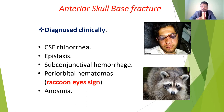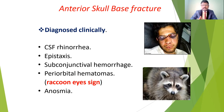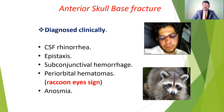In anterior skull base fractures, patients will get CSF rhinorrhea — because of the skull fracture and dura mater damage, CSF leaks and comes out from the nose. Sometimes CSF may also leak from the ear canal, called CSF otorrhea. There may also be epistaxis — bleeding from the nose — as well as subconjunctival hemorrhage. Another important sign in anterior skull base fractures is raccoon eye sign — periorbital ecchymosis or accumulation of blood surrounding the orbit.